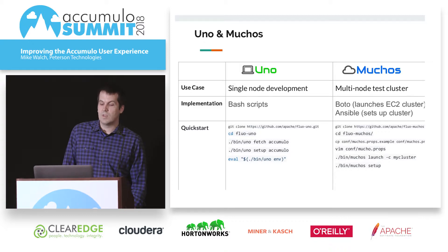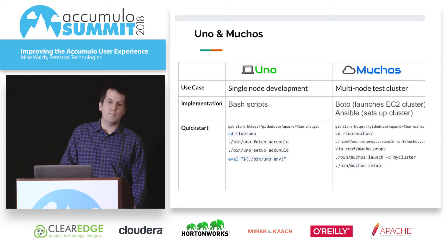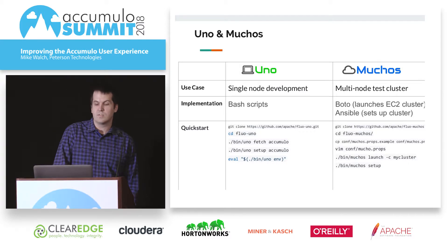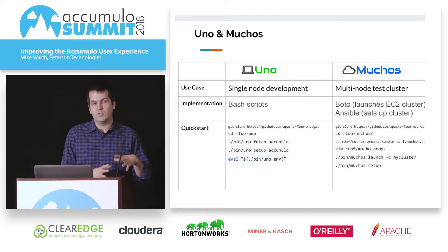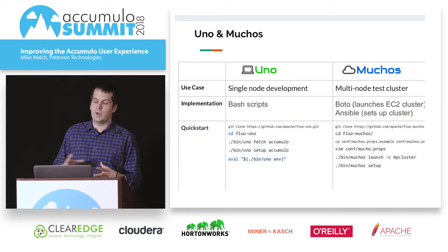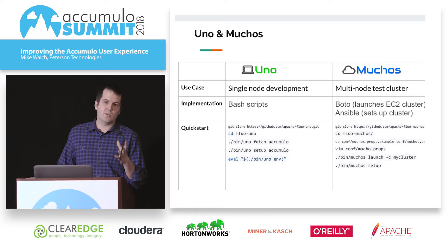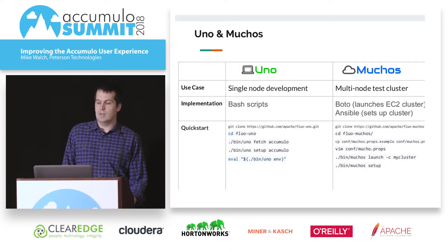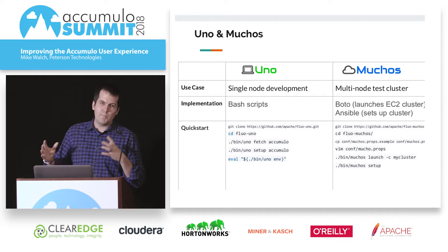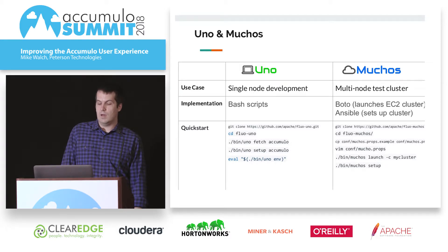I want to give a brief introduction to Uno and Muchos. They're actually under the Fluo project and each have their own repo. With Uno, you just run 'uno fetch accumulo' to pull the tarballs, then 'uno setup accumulo' will set up Hadoop, ZooKeeper, and Accumulo locally. It's easy in the configuration to change versions and stop and start Accumulo. Muchos is a bit different — Uno is for a single node local development, while Muchos is for running on a test cluster. You can pick the cluster size and versions of Accumulo and Hadoop, it launches in EC2, and then you just run 'muchos setup' which copies over configuration and using Ansible sets up the entire cluster with Accumulo running.